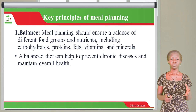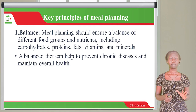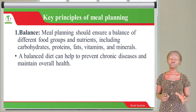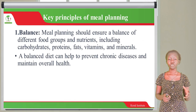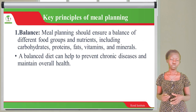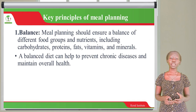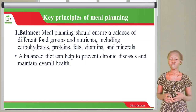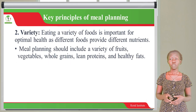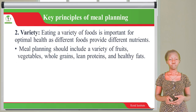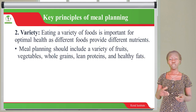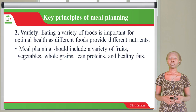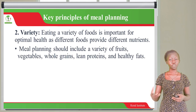What are the key principles of meal planning? The first principle is balance. Meal planning should help ensure that a balance of different food groups and nutrients are included — for example, carbohydrates, proteins, fats, vitamins and minerals. A balanced diet can help to prevent chronic diseases and maintain overall health. The second principle is variety. Eating a variety of foods is very important for optimal health because different foods provide different nutrients.